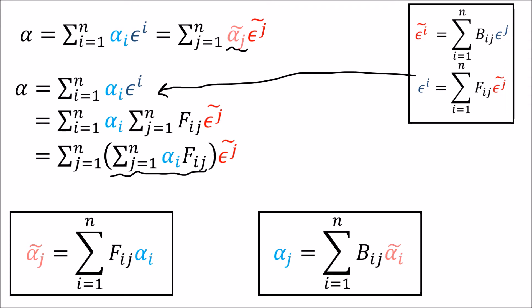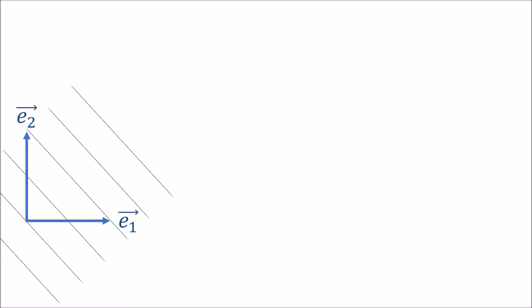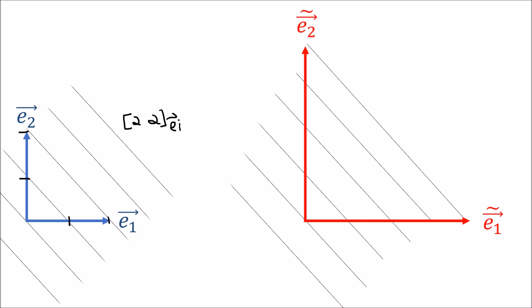Let's do a sanity check. Here we have a co-vector in space with basis e1, e2. It looks like e1 pierces two lines and e2 pierces two lines, so the components are (2, 2). Now if we make these basis vectors twice as big — getting a new basis e1-tilde, e2-tilde — e1-tilde pierces four lines and e2-tilde pierces four lines as well, giving components (4, 4). So when we increase the size of the basis vectors, we also increase the size of the co-vector components. Co-vector components transform in the same way that the basis vectors do.